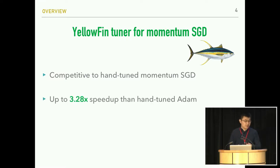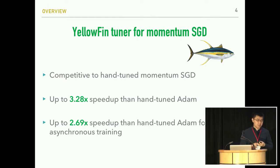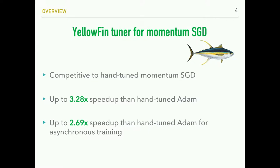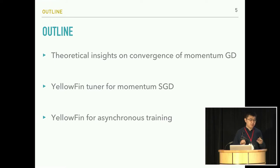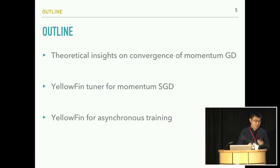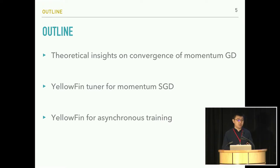We will also see the Yellowfin tuner can achieve up to 3.28x convergence speedup compared to hand-tuned Adam optimizer, and in the asynchronous setting up to 2.69x speedup over hand-tuned Adam optimizer. In this presentation, I will first go through the theoretical insights which inspired the design of the Yellowfin tuner, then demonstrate how we adapt those insights to design the tuning rule for momentum SGD, and finally discuss a variant of Yellowfin specifically designed for asynchronous training.